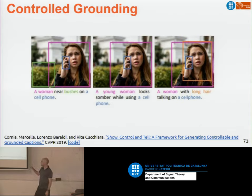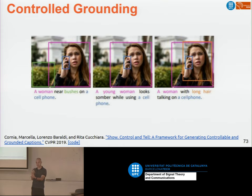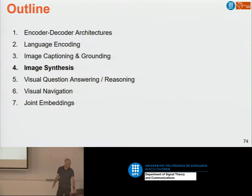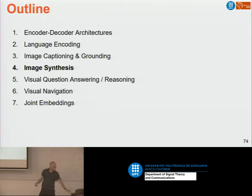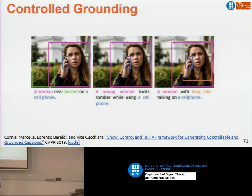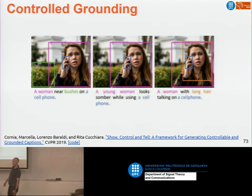In another work from the last CVPR, they did the opposite — they wanted to modify the caption by saying 'I want a caption of this specific object'. They detected objects and said 'caption with these objects', so they control the captioning. For example, here's a woman near buses and a cell phone — if you say 'I don't want buses in my caption', then they take control and generate a different caption. You can kind of control what the system is doing and not just let it go.